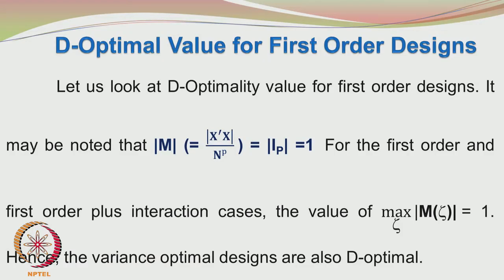Let us continue with the discussion on D-optimal designs and other optimal designs. Looking at the D-optimality value for first order designs, when we take the determinant of the moment matrix M, given as the determinant of X prime X by n to the power p, where p is the total number of parameters, we get the determinant of the identity matrix of order p, which equals 1. So for models discussing pure first order terms and first order plus interaction cases, the maximum of the determinant of M of zeta equals 1, hence the variance optimal designs are also D-optimal in nature.